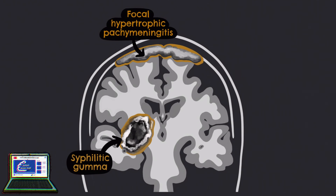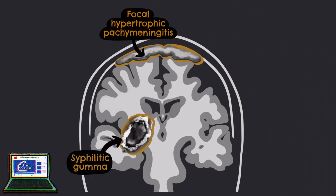The next one is quite a mouthful: focal hypertrophic pachymeningitis, a rare inflammation of the meninges. More specifically, it is diffuse inflammation that causes thickening of the dura mater. It can involve the dura mater, the brain itself, and/or the spinal cord. Corticosteroids can be used to reduce this inflammation.